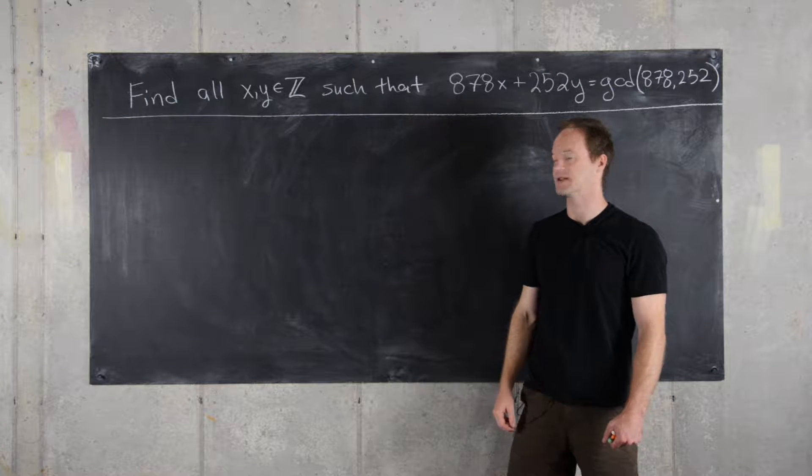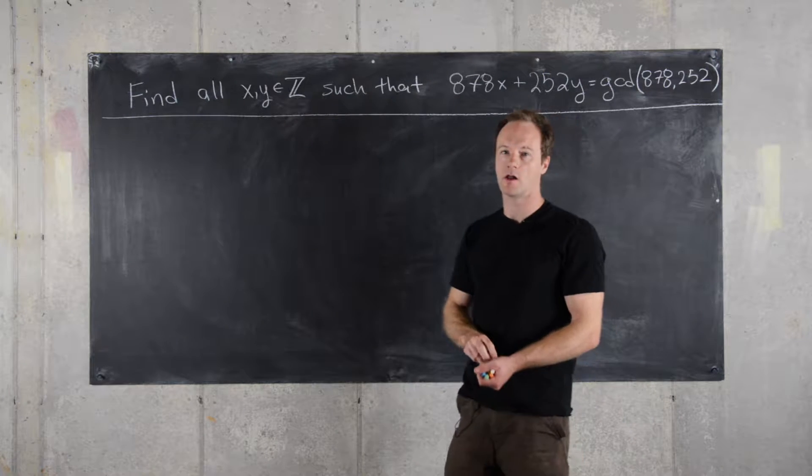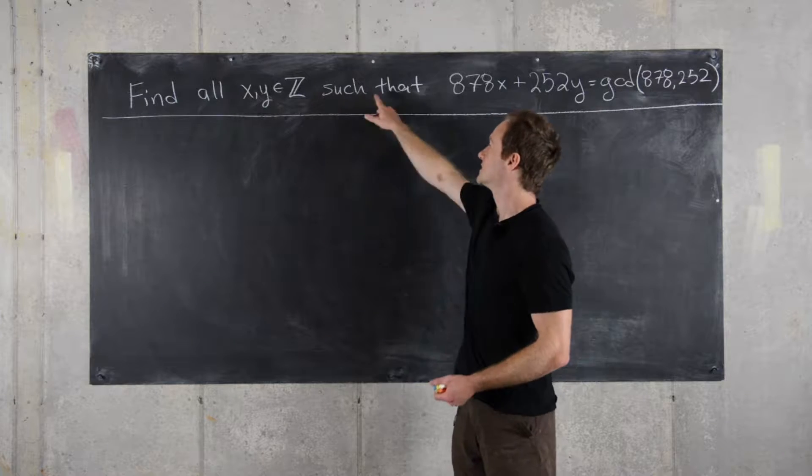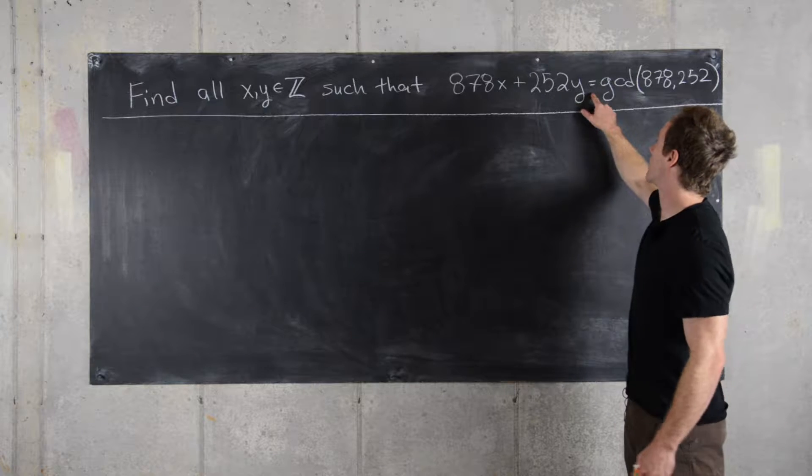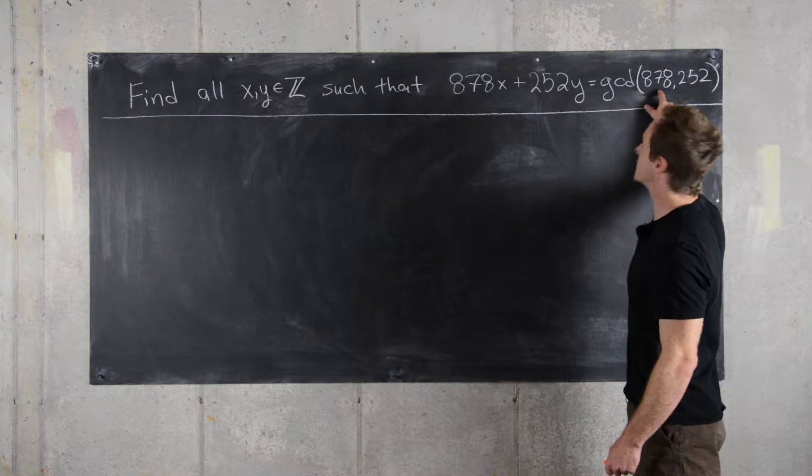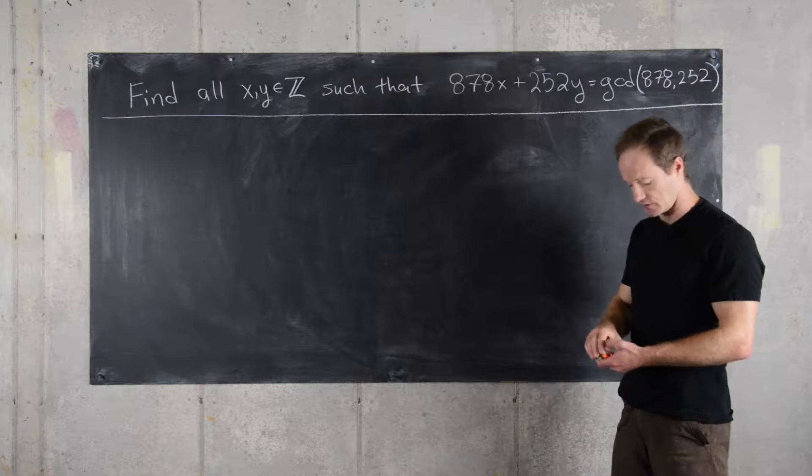Okay, here we're going to look at this following example. We want to find all integers x and y such that 878x plus 252y equals the GCD of 878 and 252.